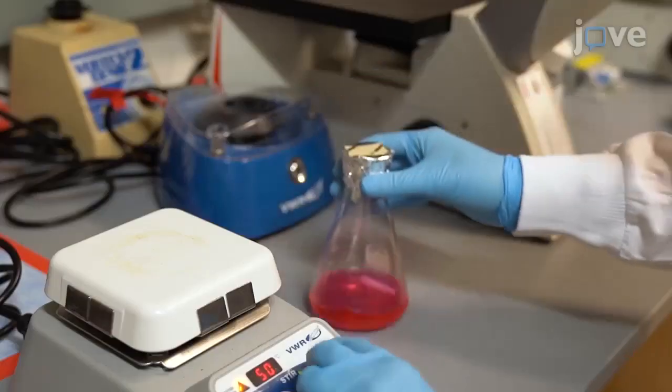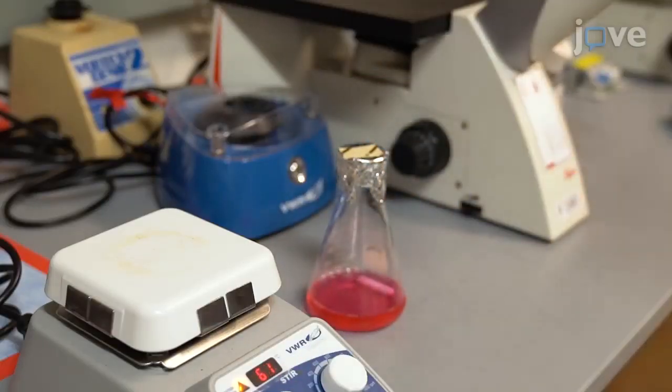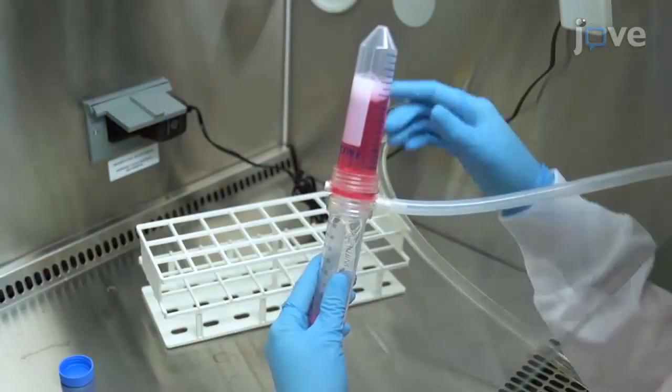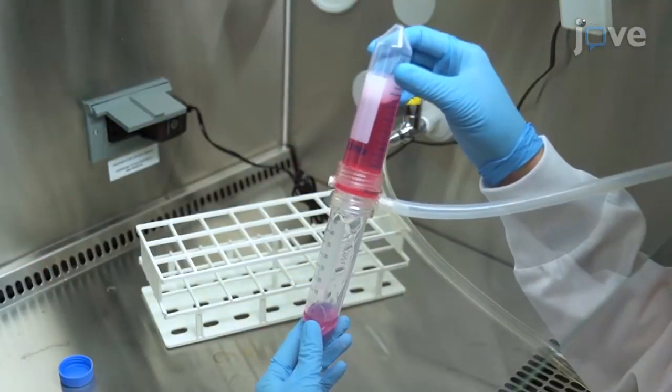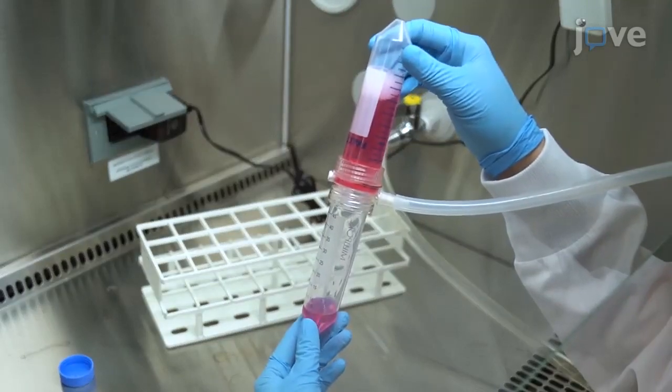After this, remove the PVA solution from the heating pad and allow it to cool down to room temperature. Once the solution is cooled, filter it through a sterile 0.2 micrometer filter.